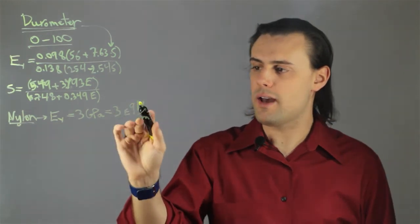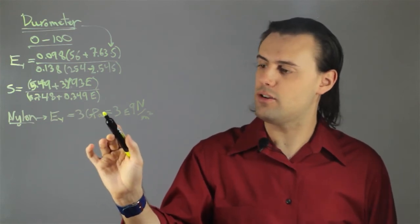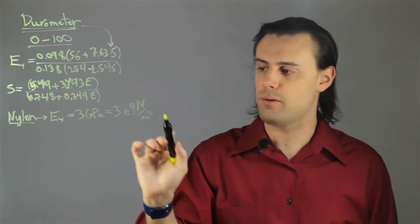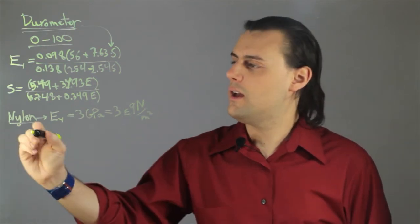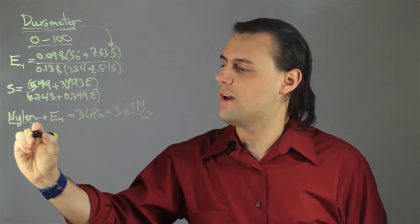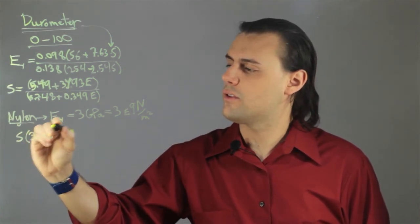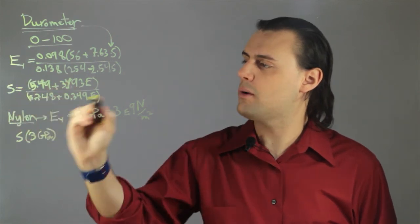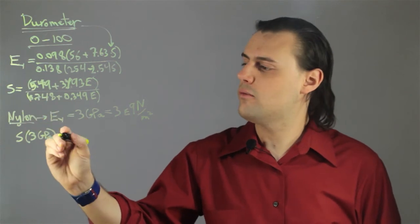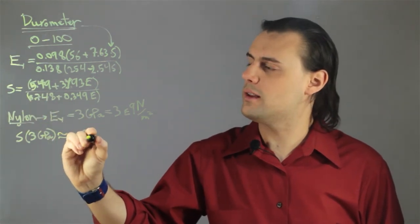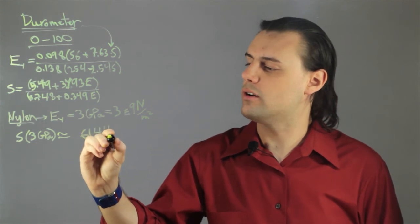So here we have the force, newtons, and the Young's modulus is formulated in terms of a pressure. So we have force per unit area, in this case newtons per meter squared. And when we plug in this value, 3 gigapascals, for the Young's modulus into our expression for this durometer measure, we end up with a value of approximately 61.44, where it's unitless.